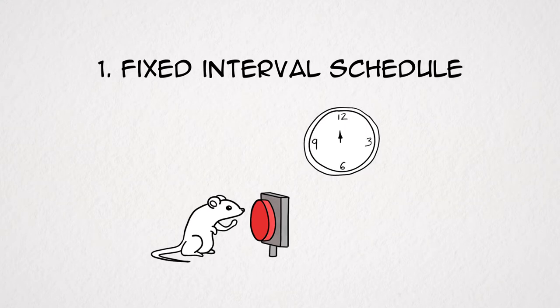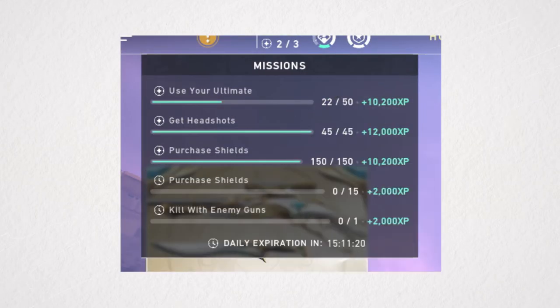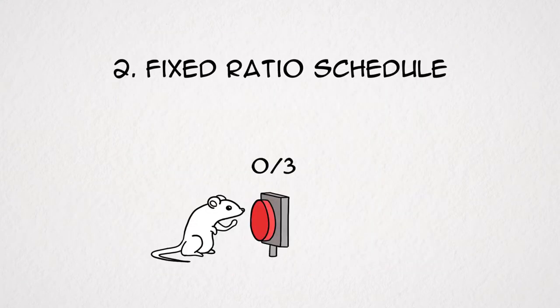When do we reward the button pressing? 1. Fixed interval schedule. Wherein a reward is given when the button is pressed after a certain amount of time has passed. Like every 5 minutes or 24 hours. So don't forget to log in every day and get 5 headshots to get extra points. Or punch in when you come to work.